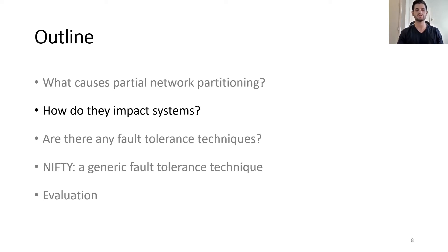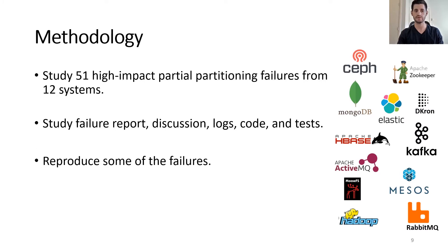We then wanted to see how partial partitions impact different systems. To do that, we studied 12 popular distributed systems. For each of these systems, we looked into their issue tracking systems and found 51 high-impact partial partitioning failure reports. For each of these failure reports, we studied the discussion between developers, the logs, and code patches. And for some of the failures, to understand their intricate details, we had to reproduce them.